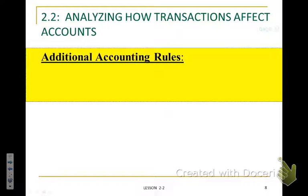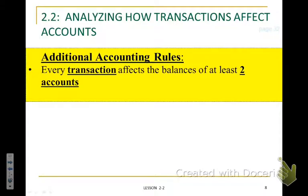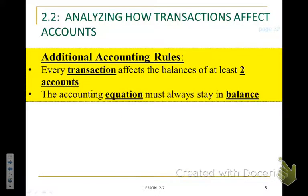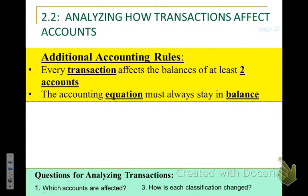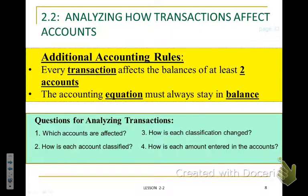We are going to look at some additional accounting rules relating to analyzing our transactions. First, every transaction will affect at least two accounts — we need to always keep that in mind when working with accounting transactions. Second, all accounting transactions must affect the accounting equation and keep it in balance. When the accounting equation changes, it always must remain in balance.